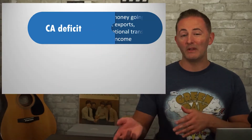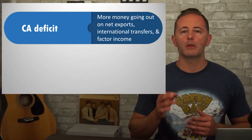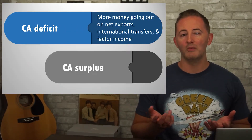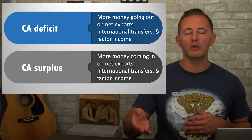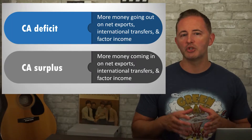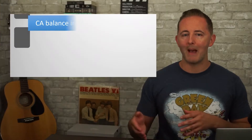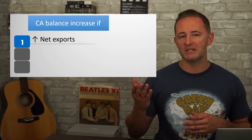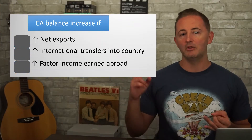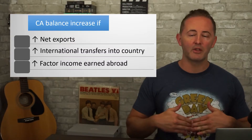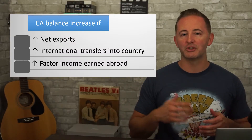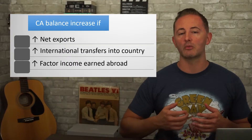When more money is going out than coming in, the current account is in deficit. On the other hand, when more money is coming in than going out, the current account is in surplus. A country's current account balance increases as a result of an increase in net exports, an increase in international transfers coming into the country, or an increase in rent, wages, interest, or profits earned abroad.